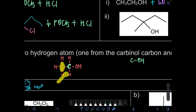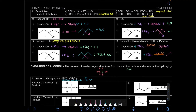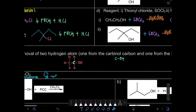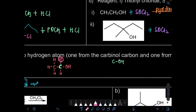So first and foremost, you need to know which one is your carbonyl carbon. Again, for oxidation, what we're going to remove — in this process, we're going to remove 1 hydrogen from the carbonyl carbon. If there are 2, we're going to remove only 1. And another one, we remove 1 from the hydroxyl group. So there are 2 hydrogens that we're going to remove.